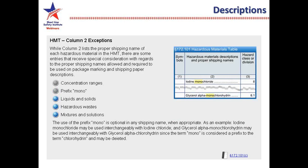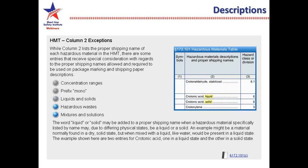The use of the prefix mono is optional in any shipping name when appropriate. For example, iodine monochloride may be used interchangeably with iodine chloride. Glycerol alpha monochlorohydrin may be interchangeably used with glycerol alpha chlorohydrin, since the term mono is considered a prefix that may be deleted. The word liquid or solid may be added to the proper shipping name for a hazardous material that may exist in different physical states. There are two examples for crotonic acid — one in a liquid state and the other in a solid state.